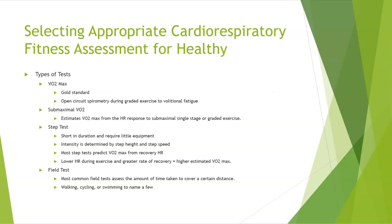Types of tests for healthy populations include: first, the VO2 max test, which is the gold standard — open circuit spirometry during graded exercise to volitional fatigue. A submaximal VO2 test estimates VO2 max from the heart rate response to submaximal single-stage or graded exercise. Step tests are typically short in duration and require little equipment; intensity is determined by step height and step speed, and most predict VO2 max from recovery heart rate — lower heart rates and greater recovery rate equal a higher estimated VO2 max. Field tests assess the time it takes to cover a certain distance, such as walking, cycling, or swimming.